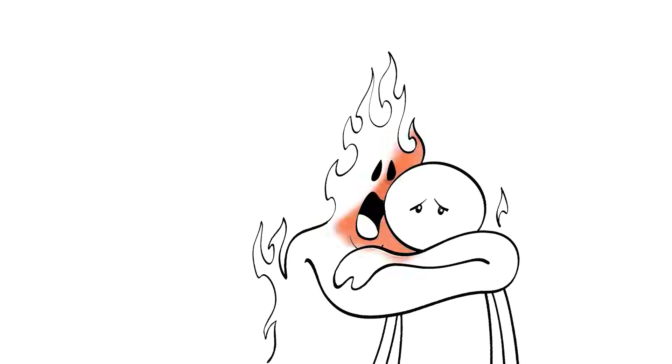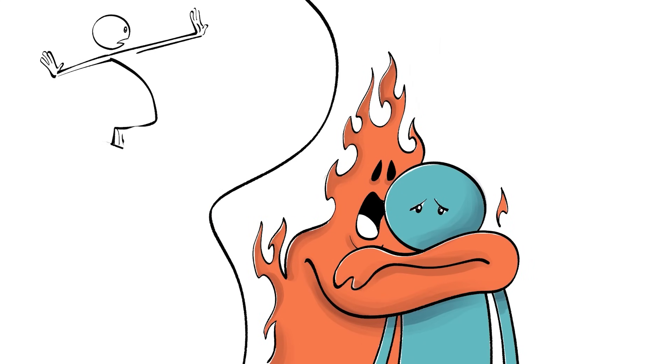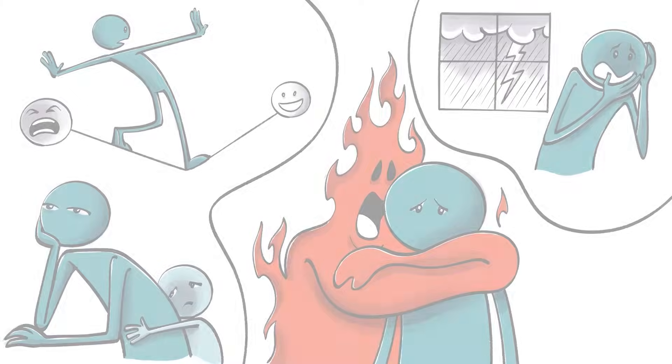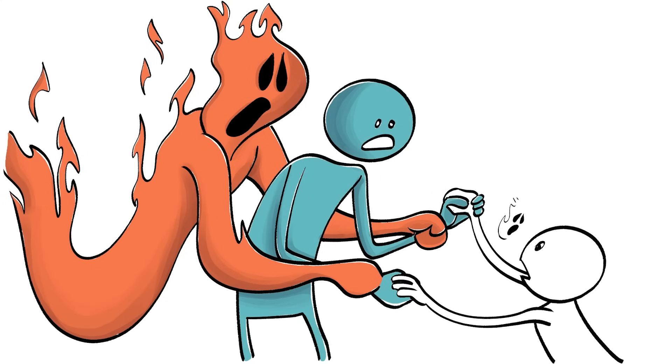When a parent suffers from trauma, they often develop heightened emotional sensitivity, anxiety, and emotional detachment. These reactions then shape how they interact with their children, and that's how the trauma travels to the next generation.